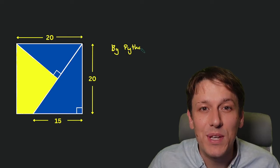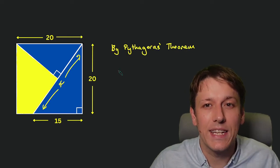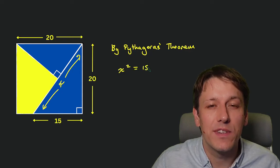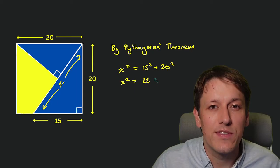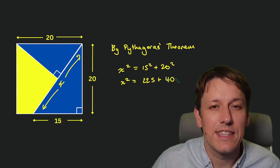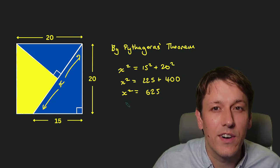By Pythagoras theorem we can find the hypotenuse of this lower right triangle. I've called it x here. x squared would be 15 squared plus 20 squared. So x squared would be 225 plus 400. That's 625 and the square root of 625 is 25. So that's the value of the hypotenuse there.